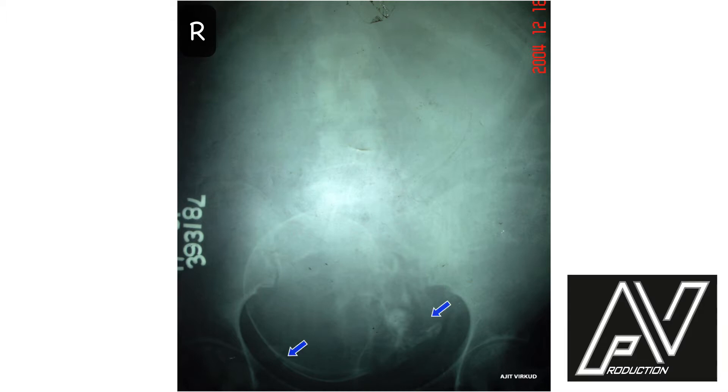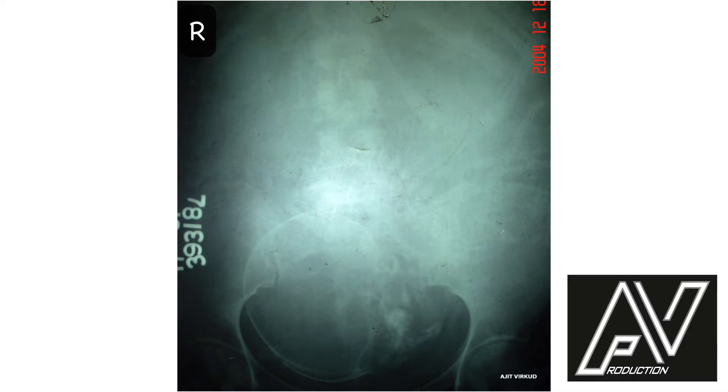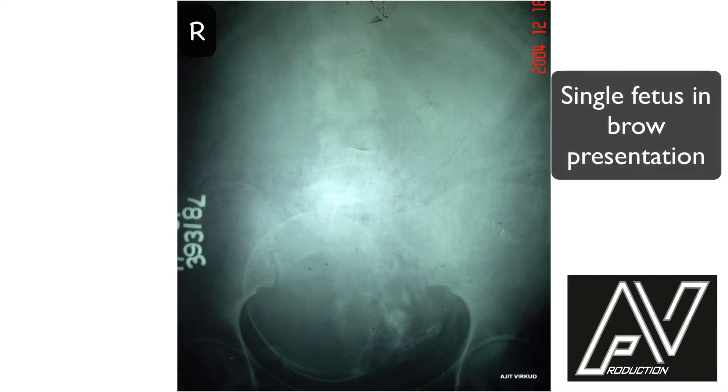This is a plain x-ray of the abdomen and pelvis, AP view, well centralized, well exposed, showing a single fetus in longitudinal lie, deflexed attitude with brow as the presenting part. There are no obvious fetal skeletal abnormalities. The presenting part is brow because the anterior fontanel is at a lower level than the mentum and the plane of the face is not perpendicular to the long axis of the vagina. Therefore, my diagnosis is single fetus in brow presentation.